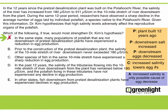Answer choice B says: Prior to the construction of the pretzel desalinization plant, the salinity of the 10-mile stretch of river downstream never exceeded 180 units. Does this strengthen the conclusion that high salinity lowers polar fish egg production? No. It does strengthen the possibility that the desalinization plant is responsible for the increase in river salinity, but it doesn't strengthen the conclusion about the cause of the decreased egg production. So we'll eliminate it.